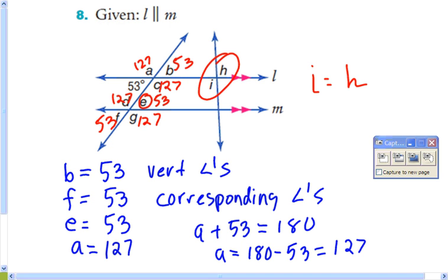But since these two lines are not parallel, we can't say that B and H, even though they're corresponding angles, we can't say they're the same because using L as a transversal, the two lines are not parallel, so you need to have parallel lines in order to use the ideas from this lesson. All right, so H and I, we can't find.